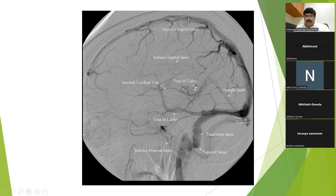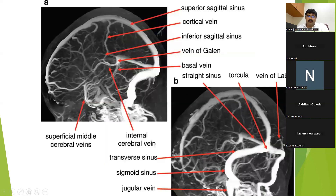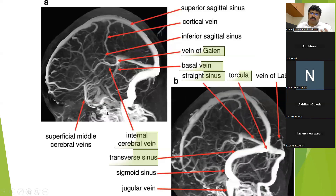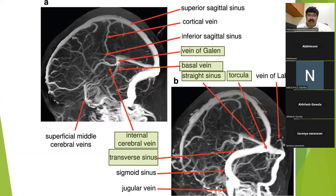This is the vein of Galen. The vein of Galen is formed by the union of the two internal cerebral veins and the basal vein of Rosenthal. The vein of Galen then drains into the straight sinus. These are the important venous tributaries which you should remember.